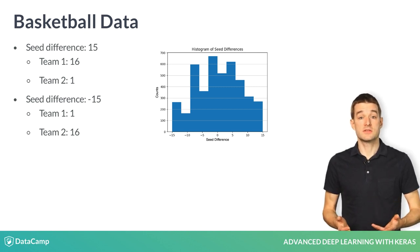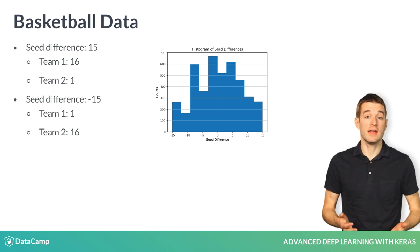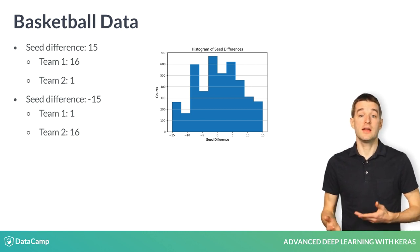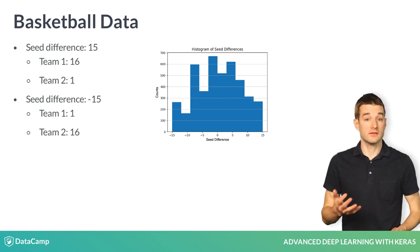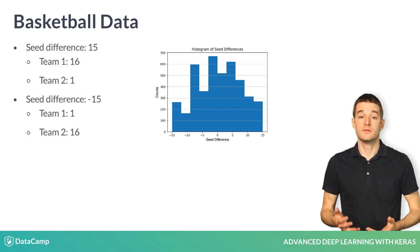A seed difference of negative 15 means that team 1 has a seed of 1 and is playing a team of seed of 16. This means team 1 is likely, though not certain, to win.